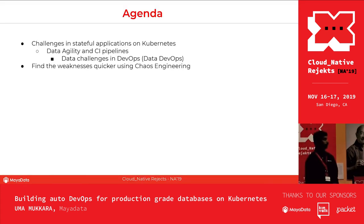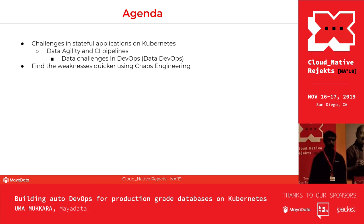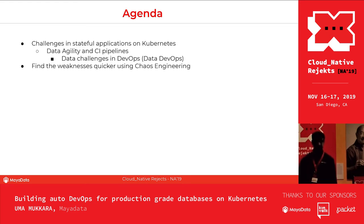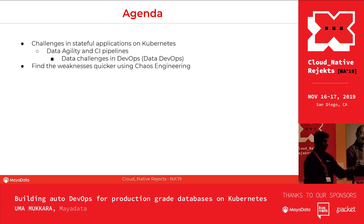About this session: we are primarily talking about stateful application challenges in CI pipelines and how to tune those CI pipelines and production clusters to a production grade. Tuning CI pipelines for better, faster efficiency means you're increasing data agility in your stateful applications. We'll talk quickly about data challenges and how to solve them. The second topic is about increasing your overall data agility by building resilient systems — specifically, how to find weaknesses faster using chaos engineering.